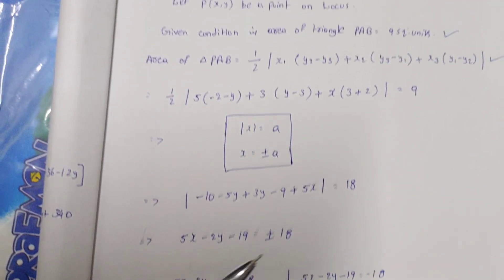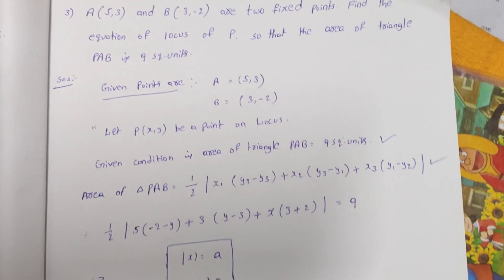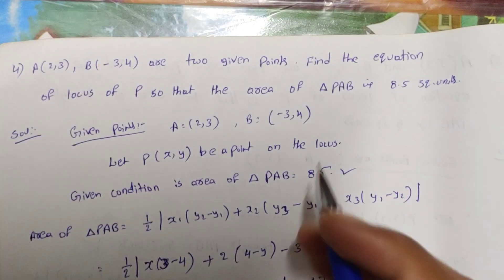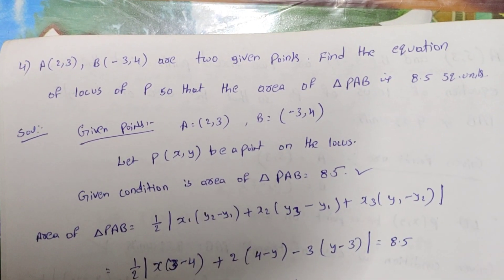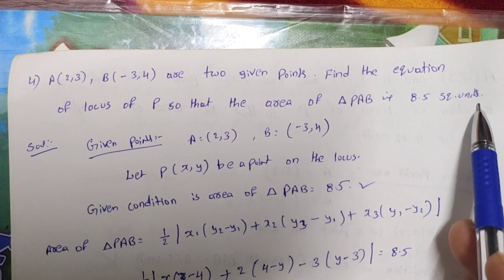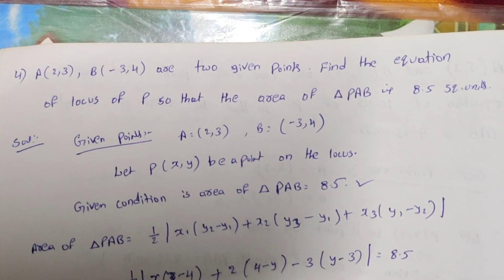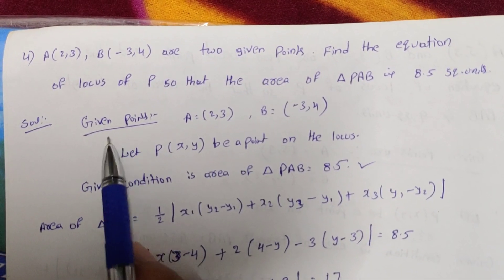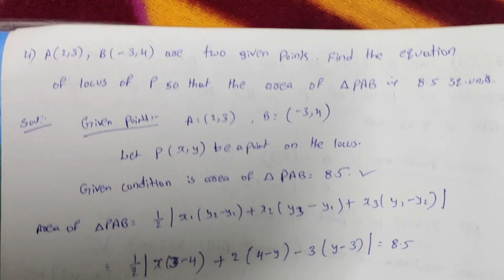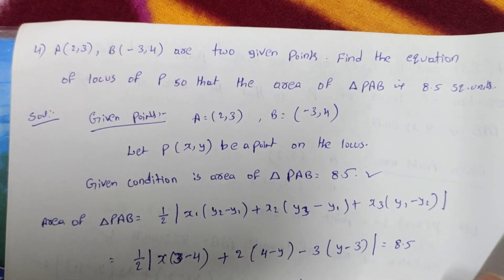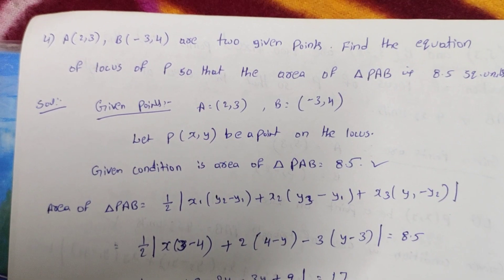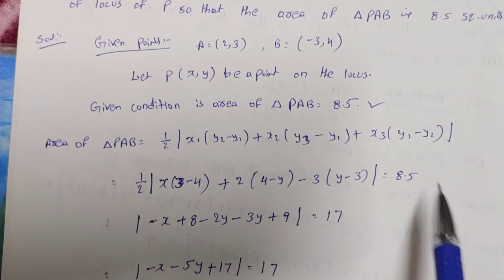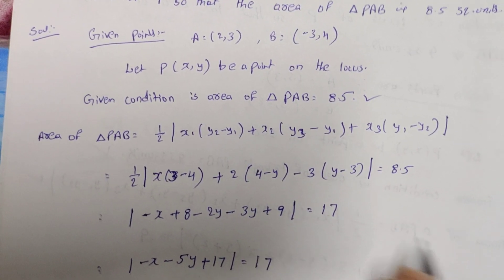This is the area of triangle formula — very easy to check. Now the same problem model, but the points are changed. We have given points A(2,3) and B(-3,4). Let P be the locus point (x,y). The given condition is area of triangle PAB equals 8.5 square units.